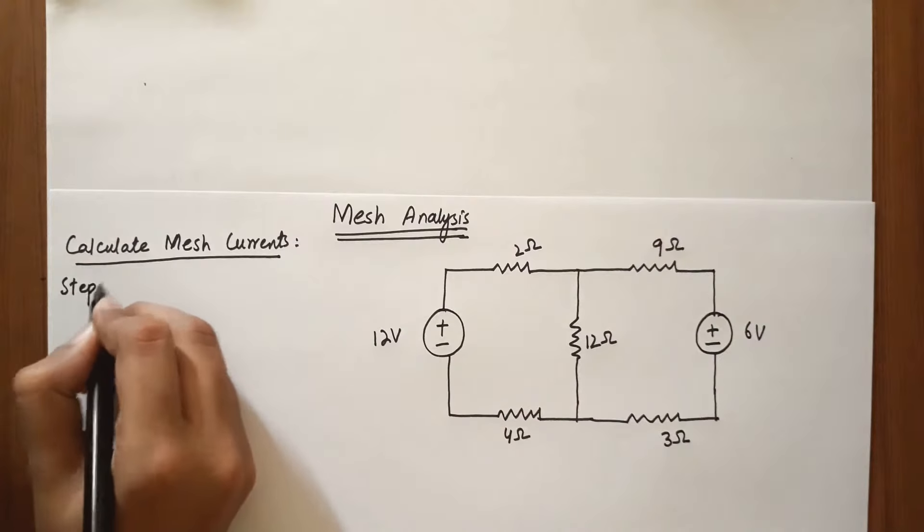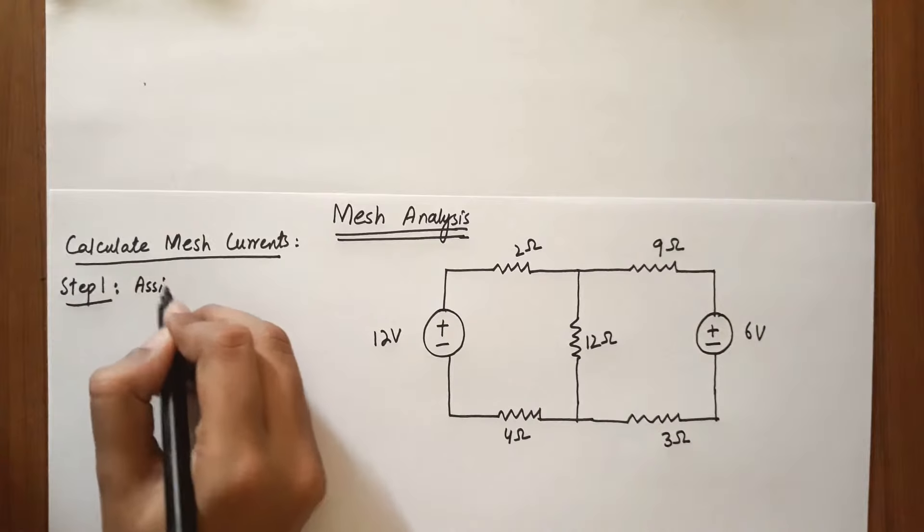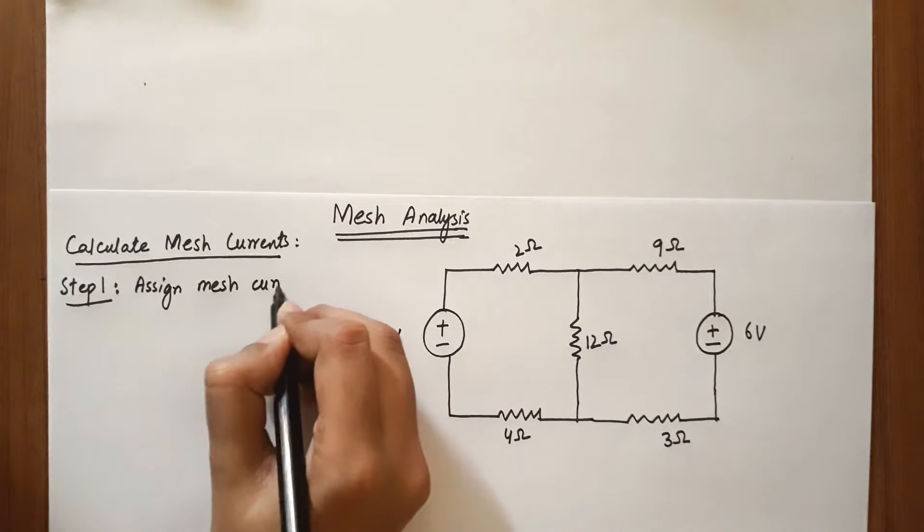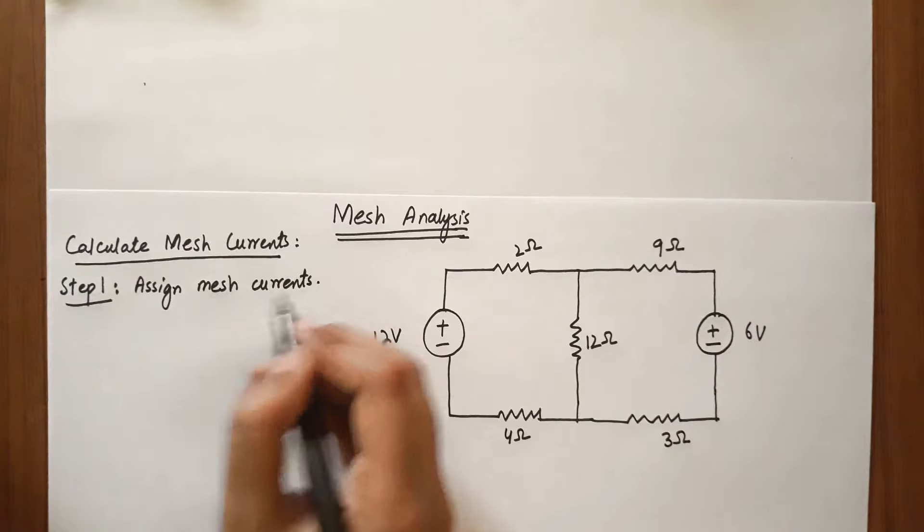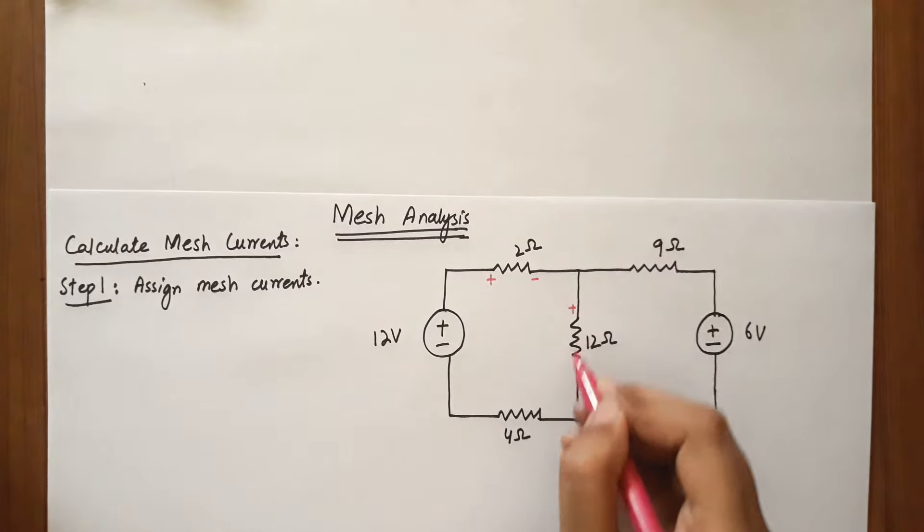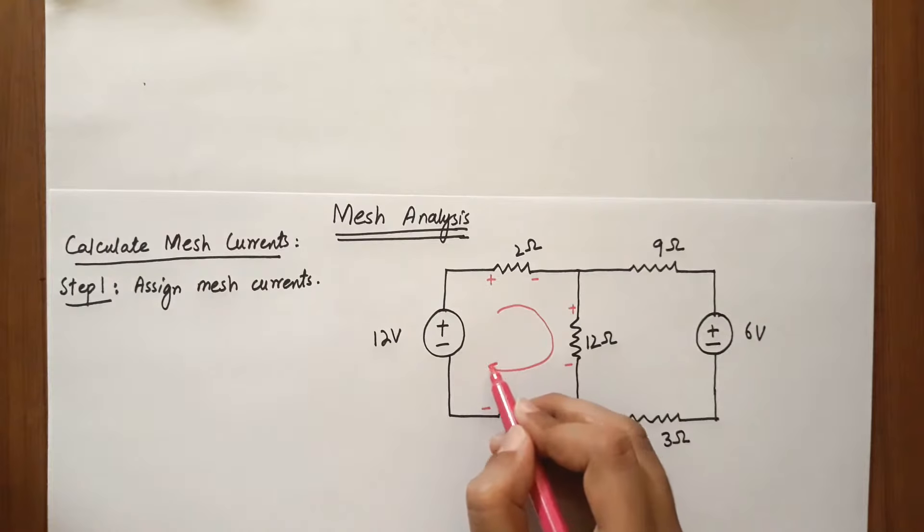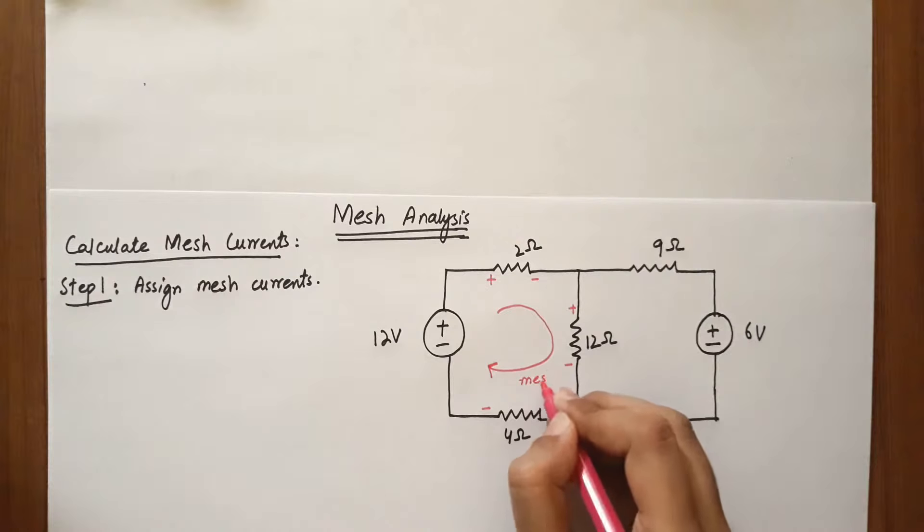We go through steps to solve the circuit. Step 1 is to assign mesh currents. The circuit will look like this. The positive end of the voltage source is connected with the resistor. This is mesh 1.